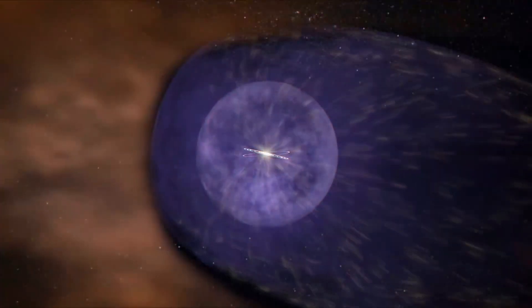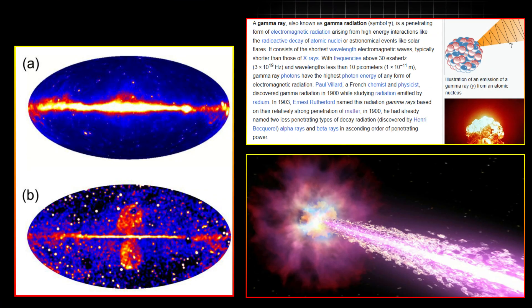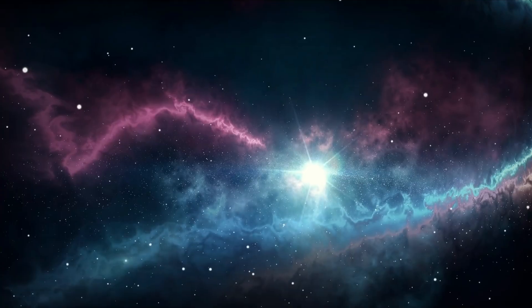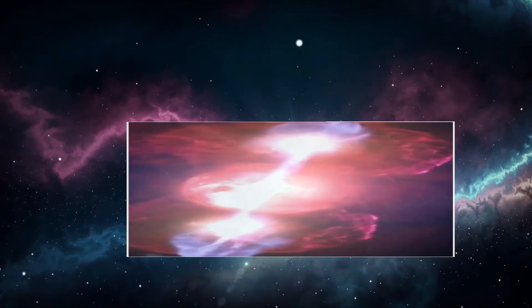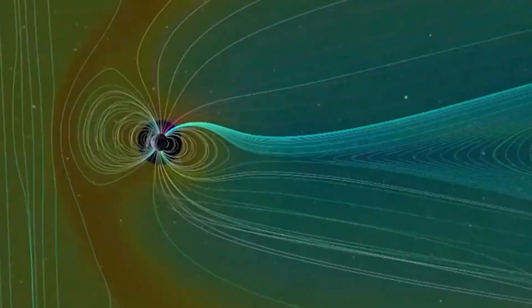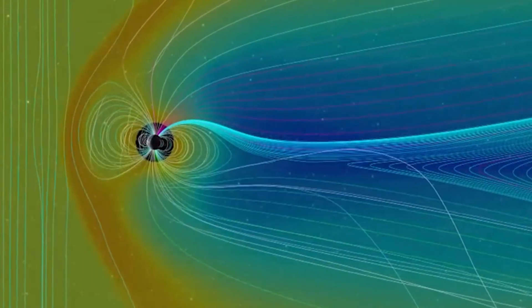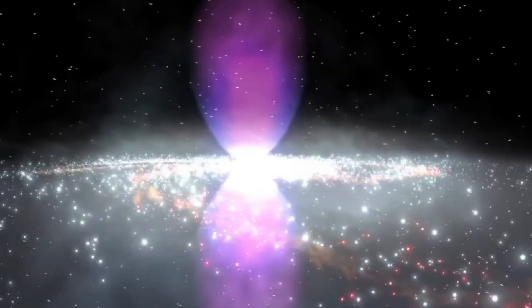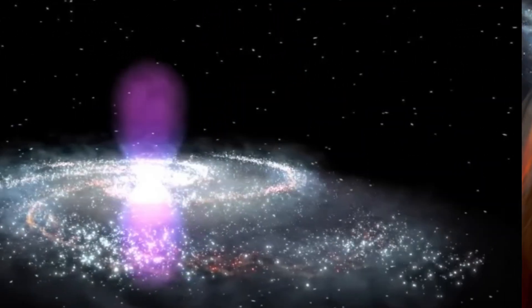Galaxies are dynamic systems, constantly changing shape due to the interplay of gravity, gas, and star formation. The interaction between the bubbles and the Milky Way's interstellar medium, especially over millions of years, could have played a role in reshaping the galaxy's spiral structure. The energy released by the bubbles might have even triggered the formation of new spiral arms, or contributed to the overall balance of stars and gas within the galaxy.